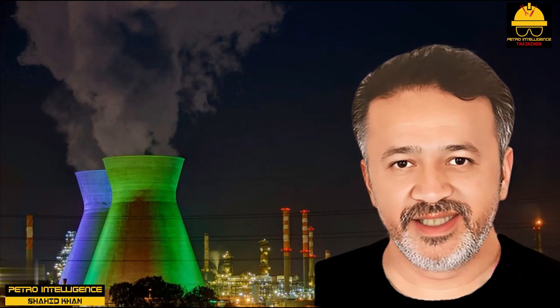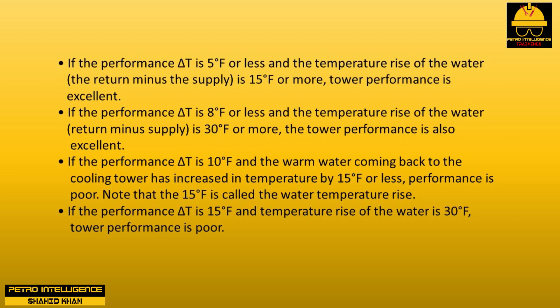Calculate the performance delta T: this is the difference between the water leaving the tower and the wet bulb temperature. Performance is excellent if the delta T is 5°F or less and the temperature rise of the water (return minus supply) is 15°F or more. Performance is also excellent if the delta T is 8°F or less and the temperature rise is 30°F or more. Performance is poor if the delta T is 10°F and the temperature rise is 15°F or less.